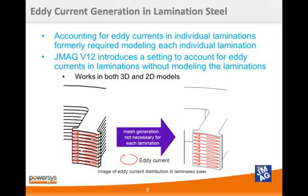JMeg Designer can now simulate the effects of eddy currents in lamination steels. Previously, you would have had to model each individual lamination and apply resistivity to those components. This process is accurate but requires a very large model with a very precise mesh. Now you can apply this condition to either a 3D solid body or 2D model in JMeg and automatically calculate the eddy currents within the lamination. This works well for calculating losses, but the effects will also apply to parameters such as torque and flux. Effectively, this is a dynamic loss calculation tool that actually reflects those losses on the parameters that you are measuring.